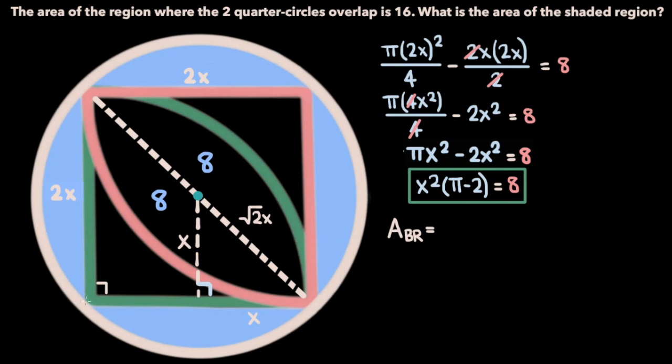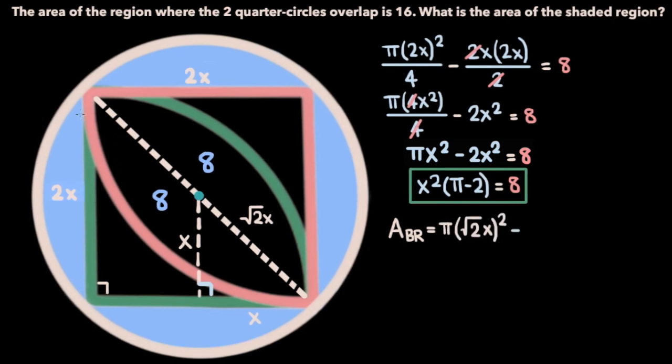If we start with the area of the circle, that's going to be πr², so in this case that'll be π times (√2x)². And from that we subtract the area of the pink and green square, which has a side length of 2x, so its area will be (2x)². Now if we simplify this expression a little bit, we get π times (√2x)² which is 2x², minus (2x)² which is 4x².